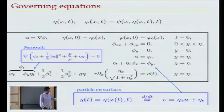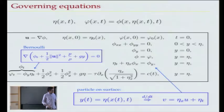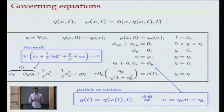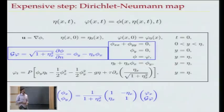There's a subtlety: phi_t in Bernoulli's equation is with space fixed, but the wave is moving. You do a chain rule to convert from the Eulerian frame to the moving frame along the interface. Surface tension tau is zero in this talk — that's a restoring force based on curvature.